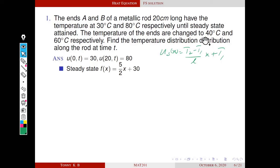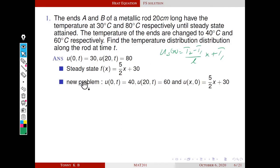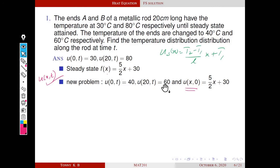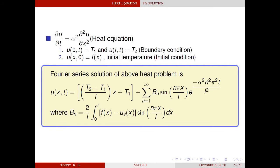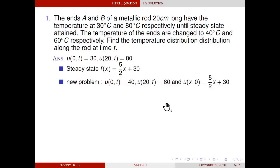After the sudden change, the end temperatures become 30 → 40°C and 80 → 60°C. The new problem has u(0,t) = 40 and u(20,t) = 60. The initial temperature distribution for the new problem is f(x) = (5/2)x + 30, which is the steady state of the previous configuration. We solve this using the algorithm: assume u(x,t) = us(x) + ut(x,t).